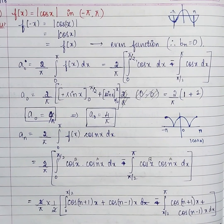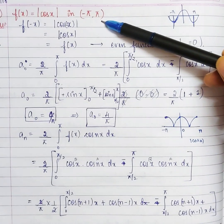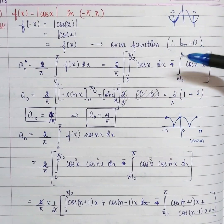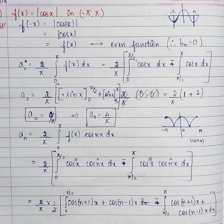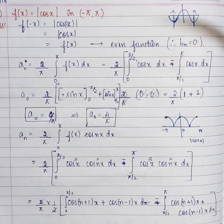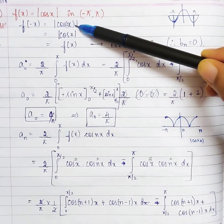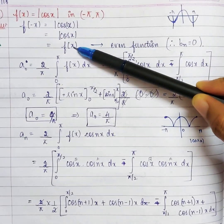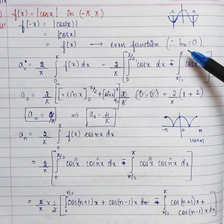As always, we check whether the function is even or odd by replacing x with -x, since the interval is -π to π. We get |cos(-x)| = |cos x|, which is the same function. So the function is even, and therefore b_n = 0.